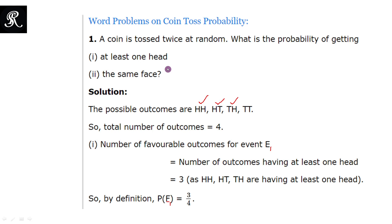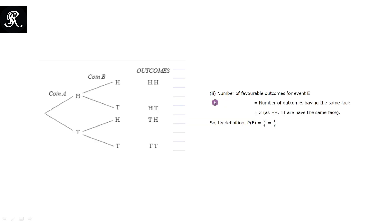Now we will discuss the probability of the second event — that is, the same face occurring when we toss a coin twice. In the second part, the number of favorable outcomes for event E2 would be equal to the number of outcomes having the same face. We replace E with E2 to show it is the second event. So E2 is the event: number of outcomes having the same face.